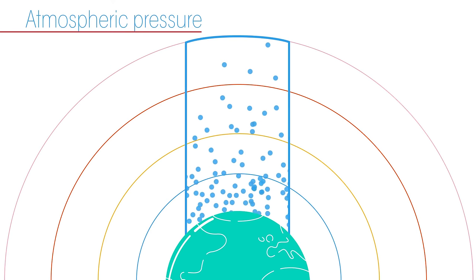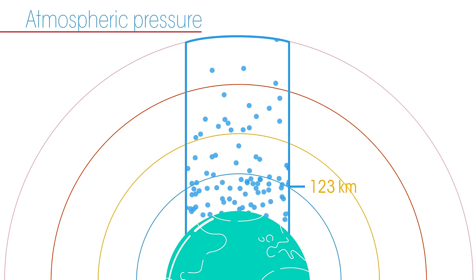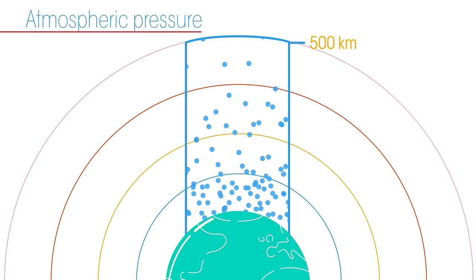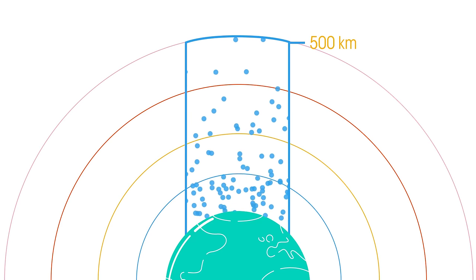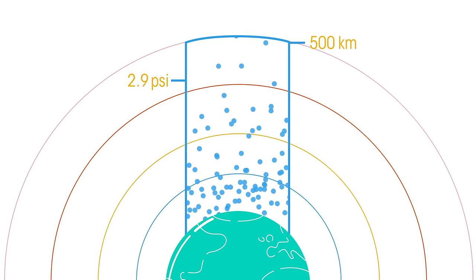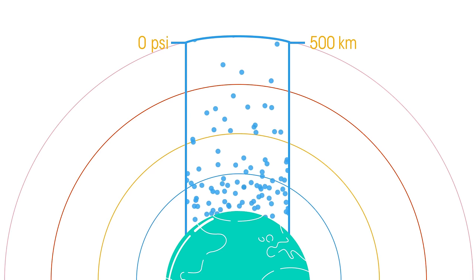The pressure of the air is related to the weight of the air above. As we increase altitude, so distance from the Earth, there is still air above us, but there becomes less air as we go further away from the Earth. So, air pressure decreases as we increase altitude, until we get to the edge of the atmosphere where there is no more air and so there is no pressure.